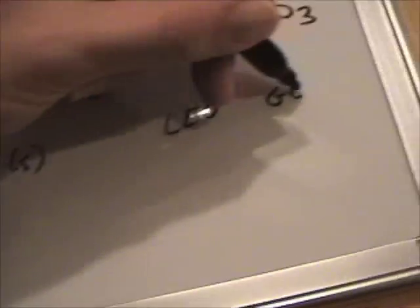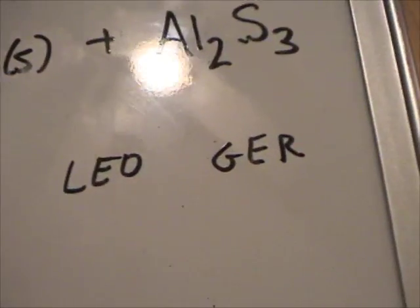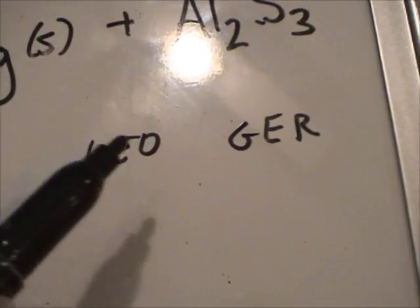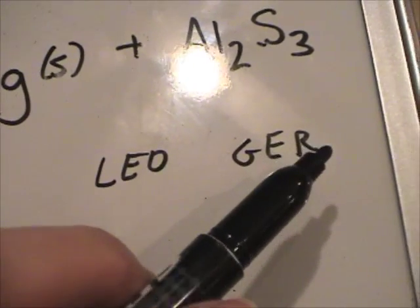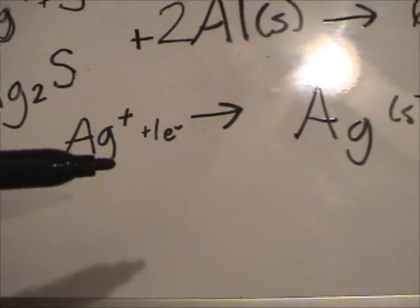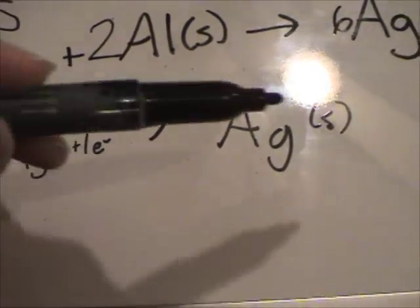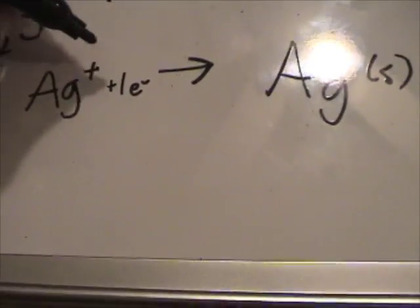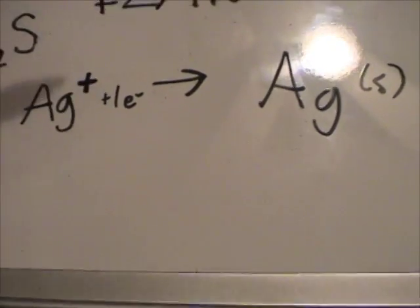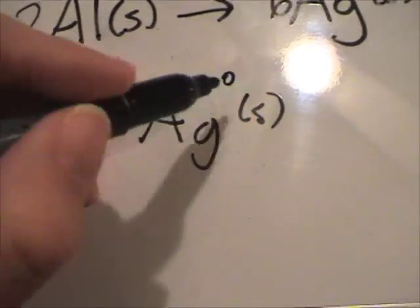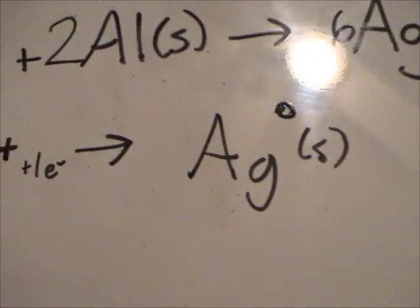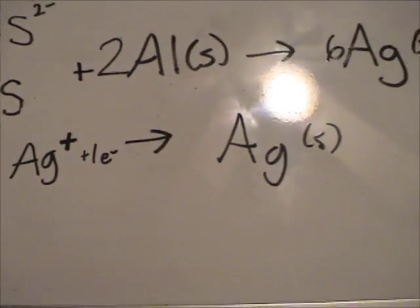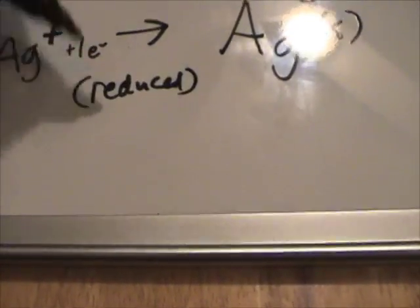And remember, Leo says ger or oil rig, either way. But loss of electrons is oxidation. Gain of electrons is reduction. We have gained an electron. It is reduced. Or, I like to think also just the charge went from a plus one down to a zero. Because remember, all elements in their naturally occurring state have an oxidation state of zero. So, it was reduced.